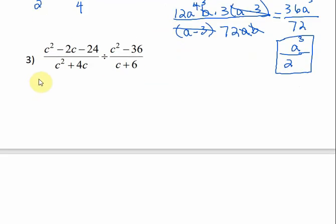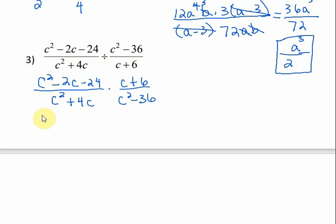For number 3, again, keep the first one the same. Change it to multiplication and flip the second one. This numerator is a trinomial, so let's see if it would factor into two binomials, C and C. The factors of 24 that would subtract to give me 2. Let's see what the factors of 24 are. We have 1 and 24, 2 and 12, 3 and 8, 4 and 6. So which ones would subtract to give me 2? 4 and 6. And the biggest term is negative. The signs are different. The biggest term is negative.